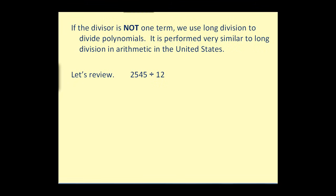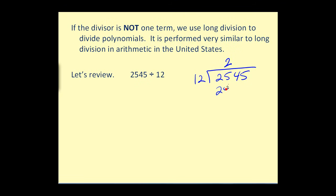Let's first set it up in the correct form. Here we have the dividend and here we have the divisor. We start by looking at the divisor and starting with the left digits of the dividend. How many 12s are there in 25? We would say 2. Then we multiply by the divisor: 2 times 12 equals 24. The next step is we subtract: 25 minus 24 equals 1. We bring down the next digit and continue this process until we run out of digits.